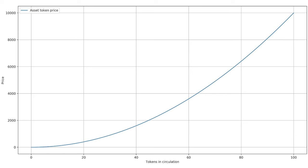A bonding curve is a smart contract that sits on the blockchain. At any point in time, any user can either buy your native token from it or sell your native token to it. This bonding curve — this one is quadratic — specifies what the price of the token is at any given point in time. On the y-axis we have the price of the token and on the x-axis the number of tokens in circulation, so the price is just a function of the number of tokens in circulation and it increases quadratically.